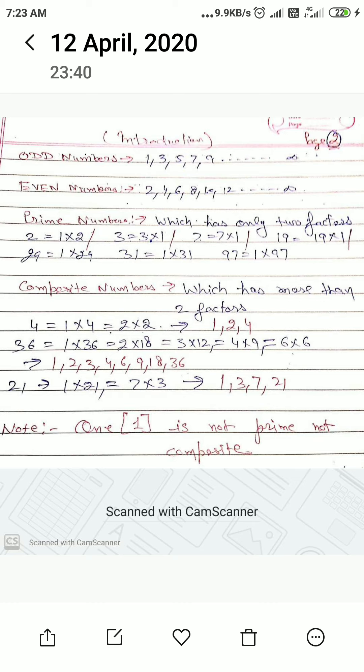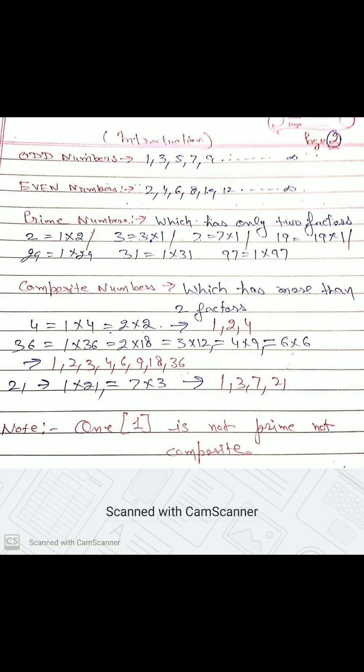Prime number: which has only two factors. For example, number two equals one into two. It has two factors, so it is prime number. Three equals one into three. It has two factors, one and three, so it is also prime number.